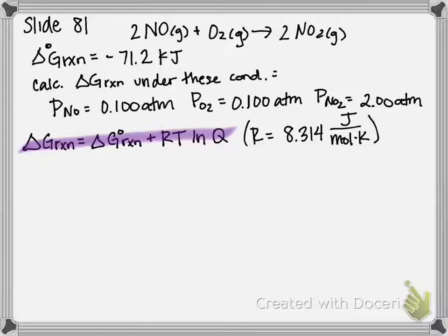So R is our gas constant, and it needs to be in units of joules over mole Kelvin. So our R in this case is going to be 8.314 joules over moles times Kelvin.